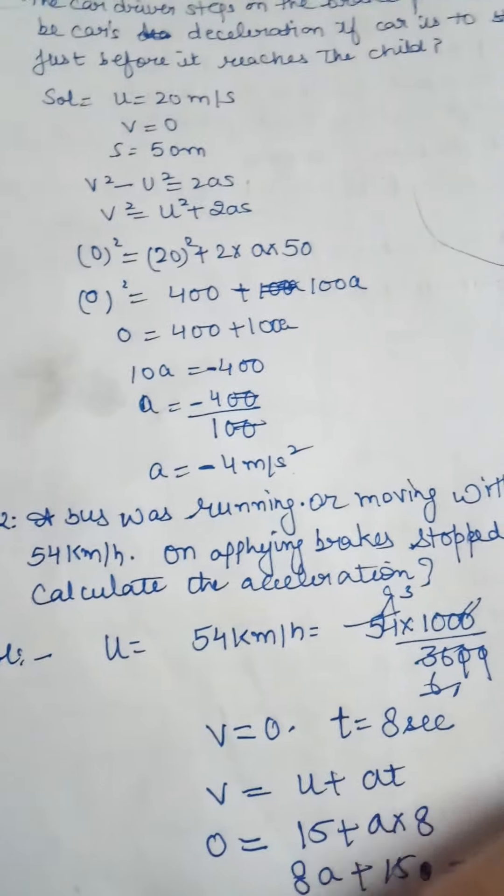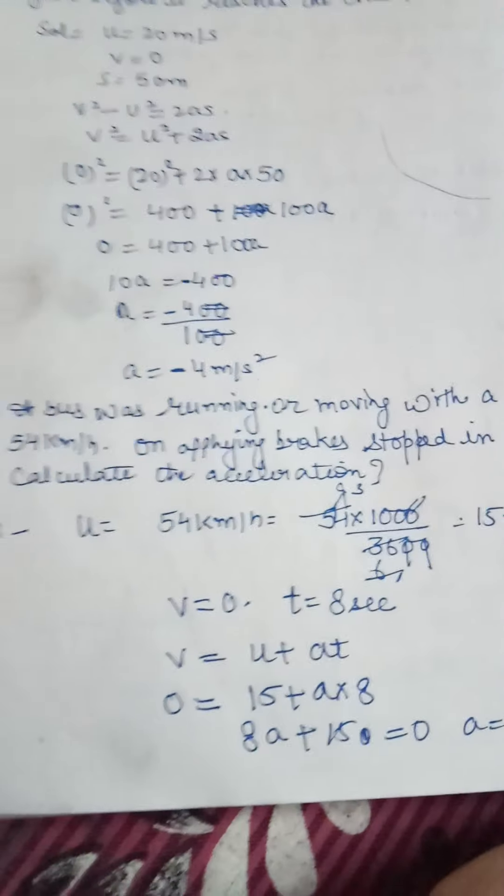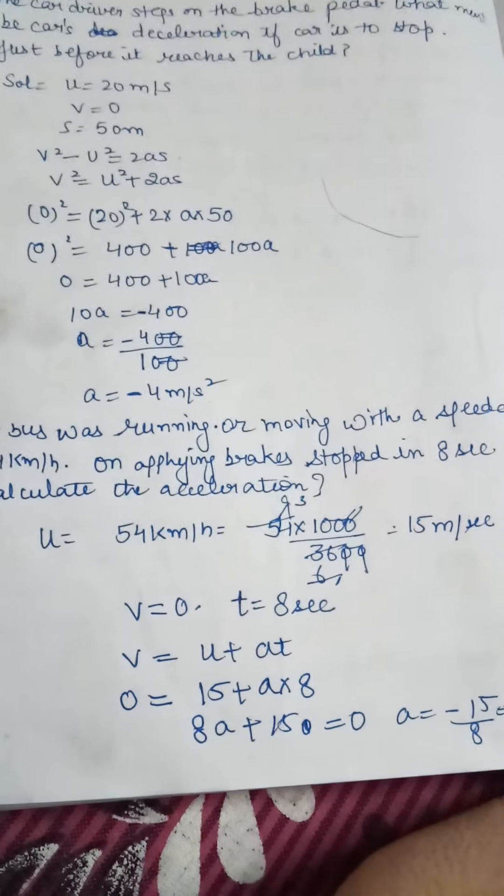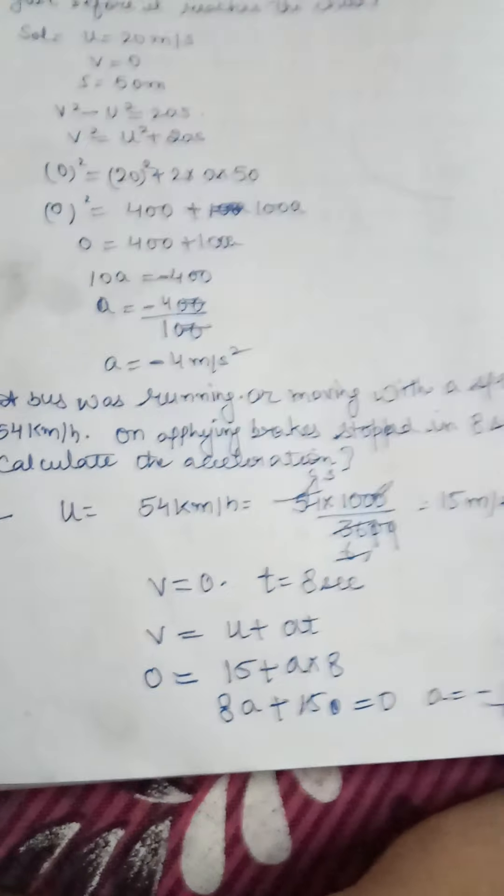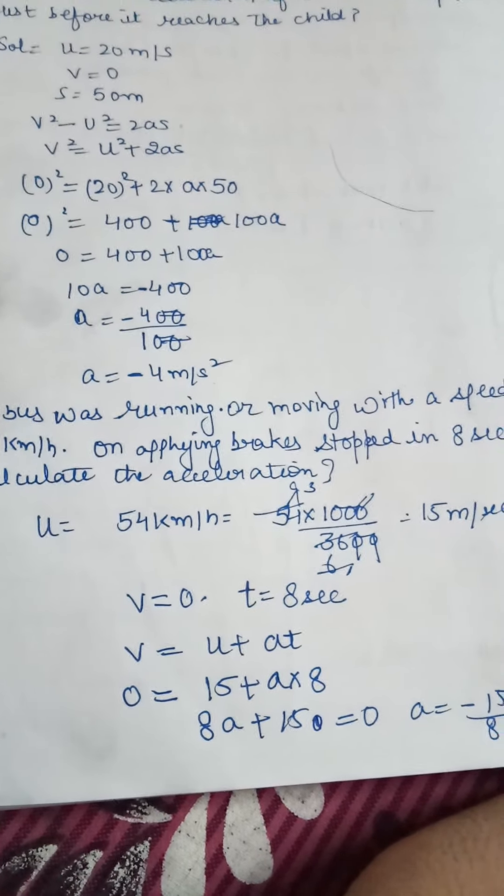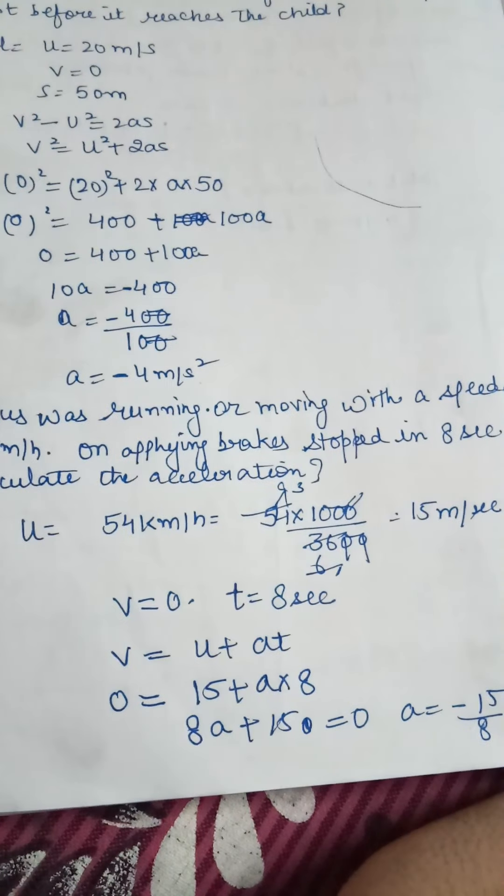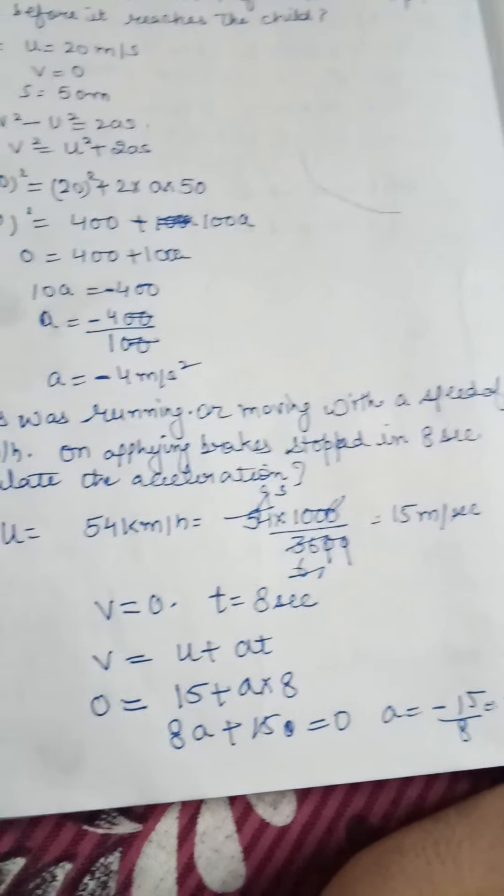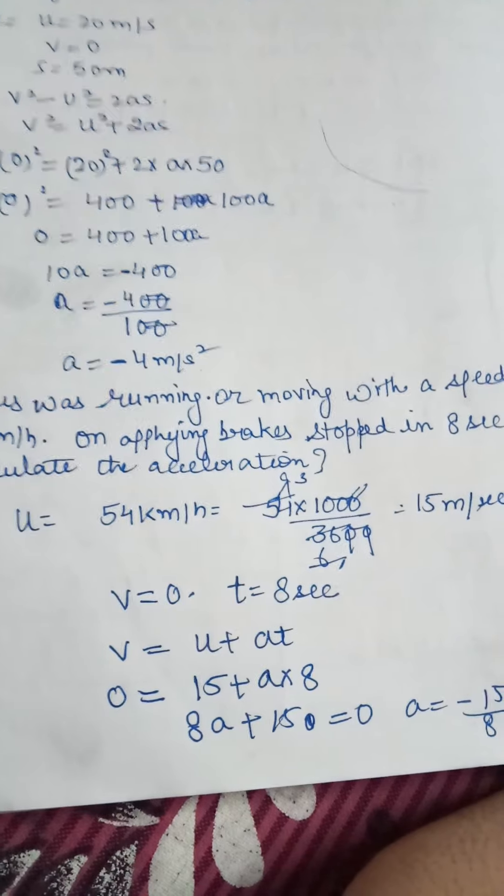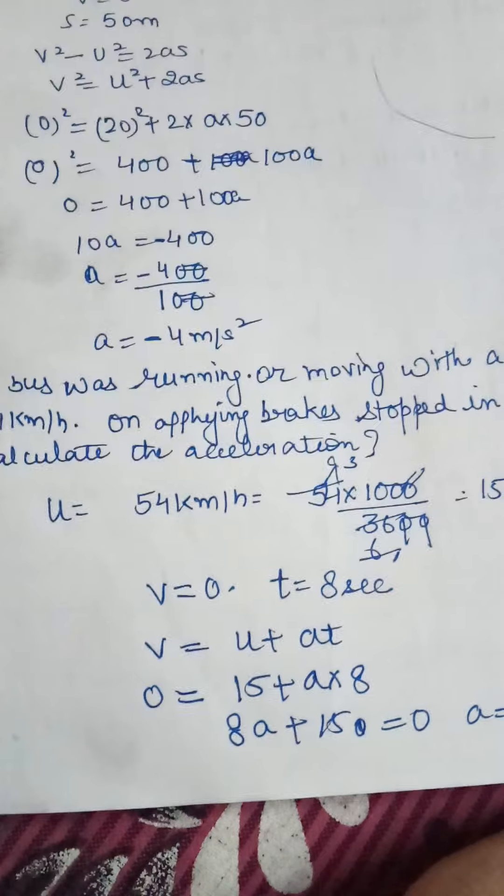The next question was: a bus was running or moving with a speed of 54 kilometers per hour. On applying brakes, it stopped in 8 seconds. The bus was running and moving with a speed of 54 km per hour, and brakes applied for 8 seconds. The bus stopped and came to rest. Calculate the acceleration.